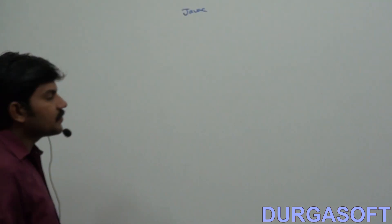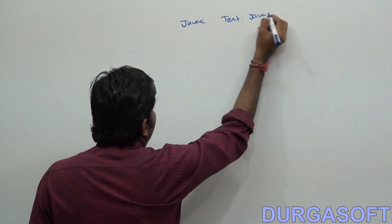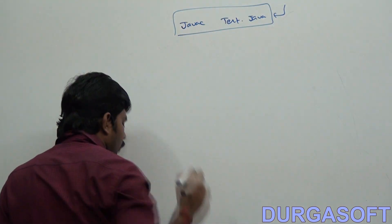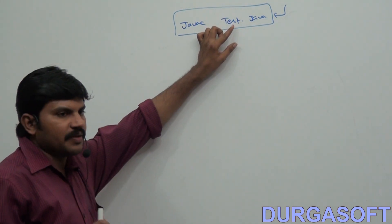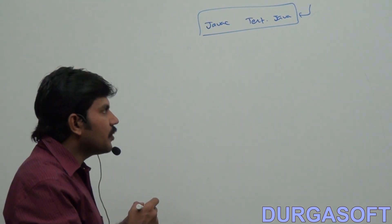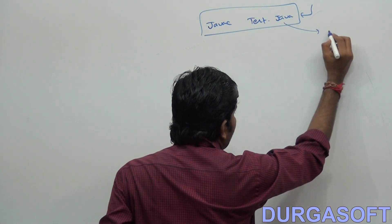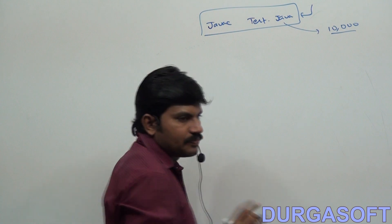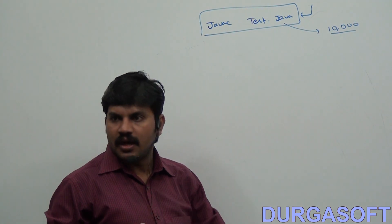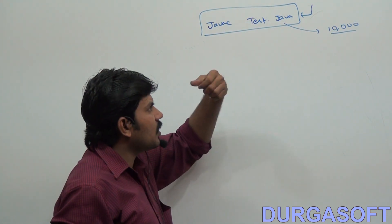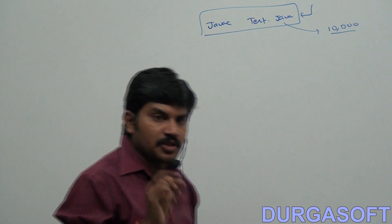Now, what is PATH? If I am taking 'javac test.java' — I am trying to compile test.java. Assume it contains around 10,000 lines. In each and every line, it checks whether things are properly declared or not, whether every method is called properly or not, every variable declared properly or not. This javac command is responsible to check all 10,000 lines of code. Whenever we use javac, a big activity by default is going to be performed.